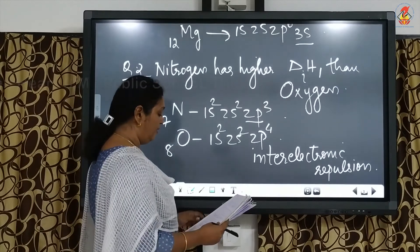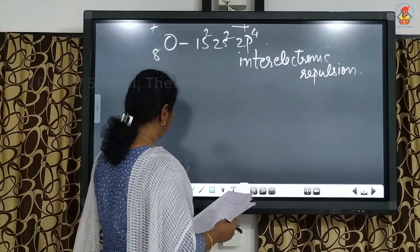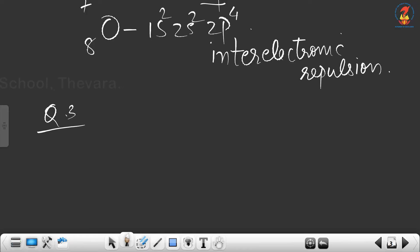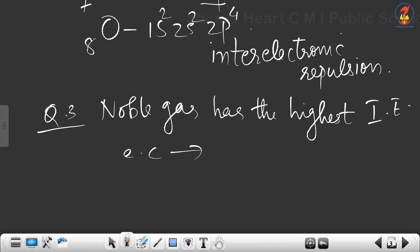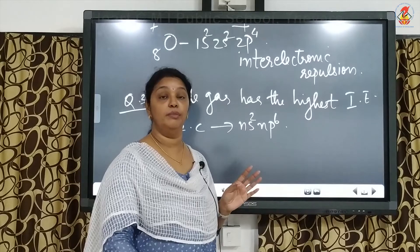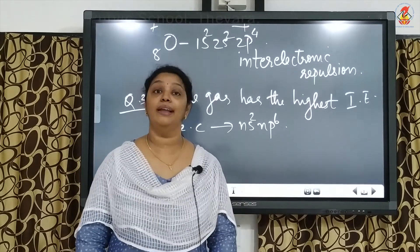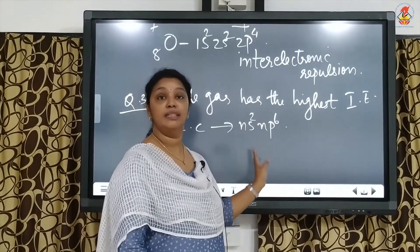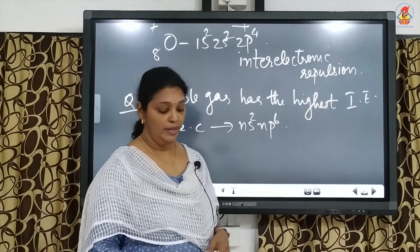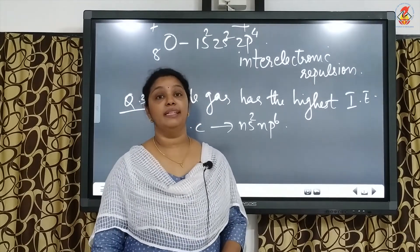Question 3: noble gases have the highest ionization enthalpy in their respective periods. The electronic configuration of noble gases is ns² np⁶ — completely filled orbitals. The electron must be removed from a completely filled p orbital, which requires very high ionization enthalpy. They have extra stability due to completely filled orbitals, hence high ionization enthalpy. This completes our discussion of ionization enthalpy.